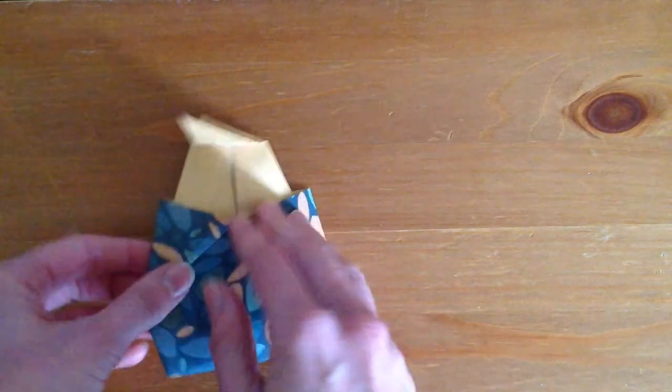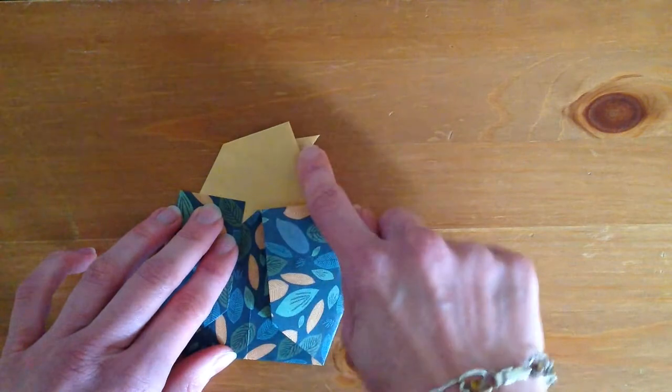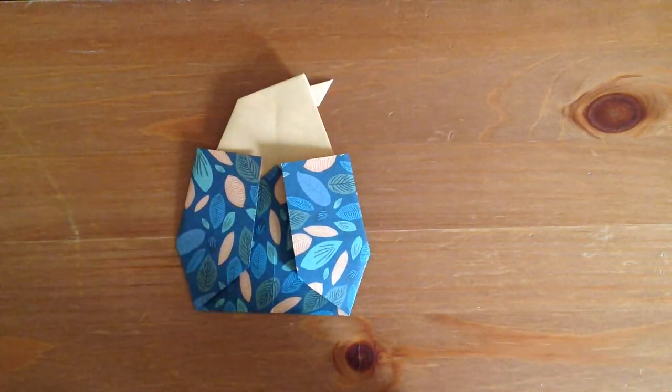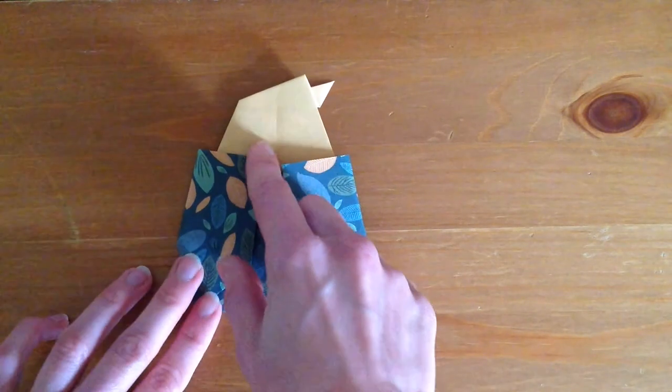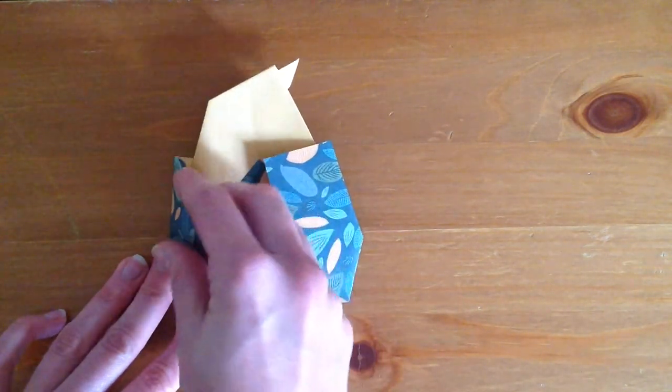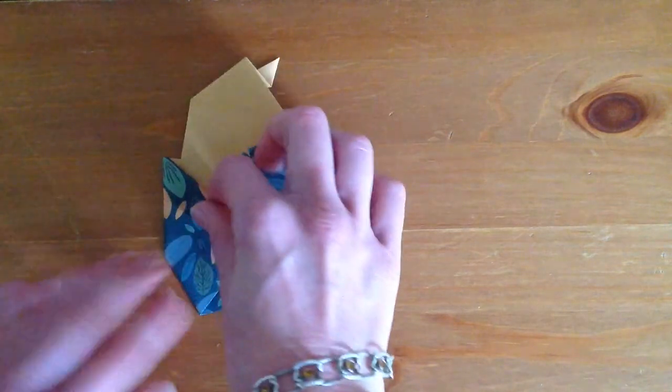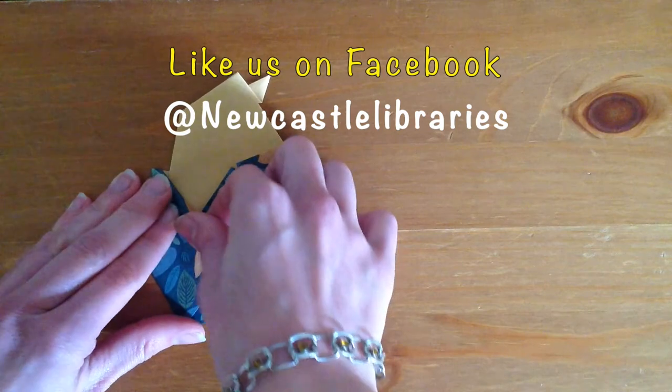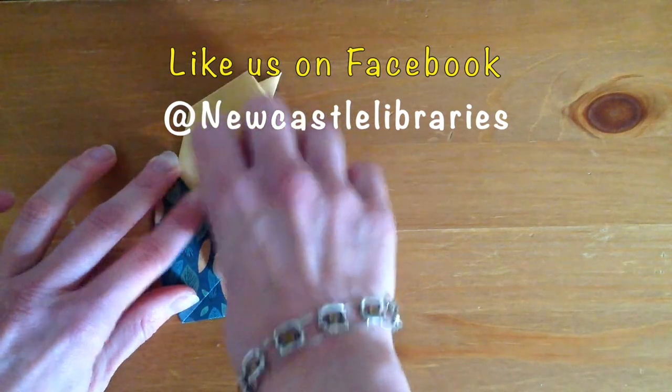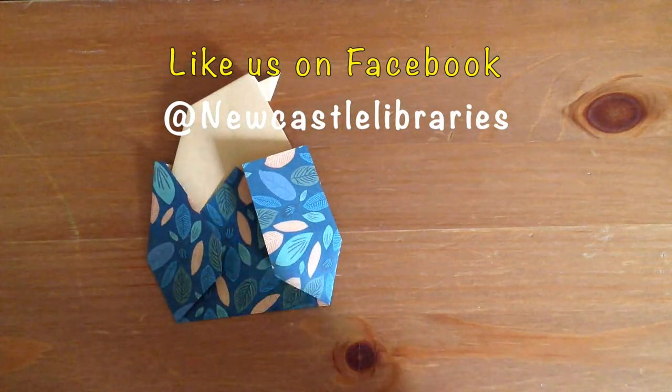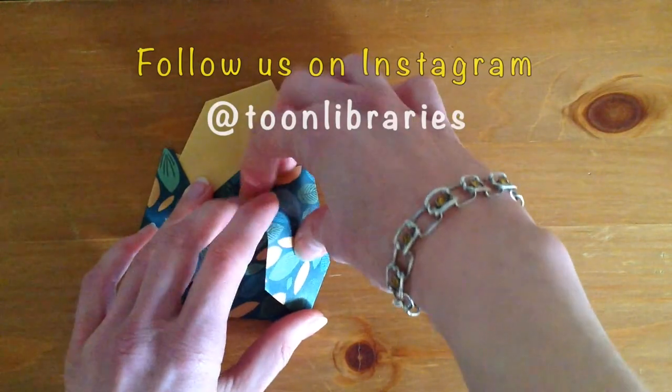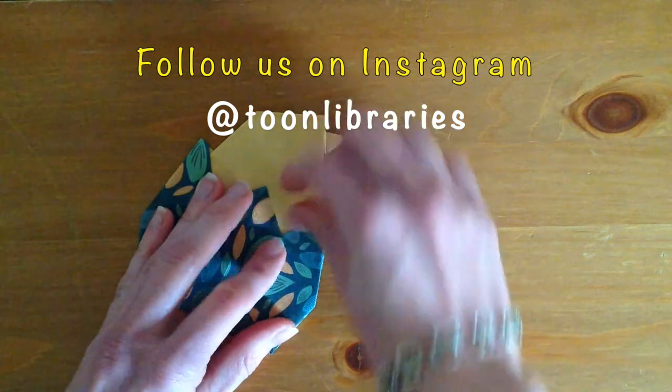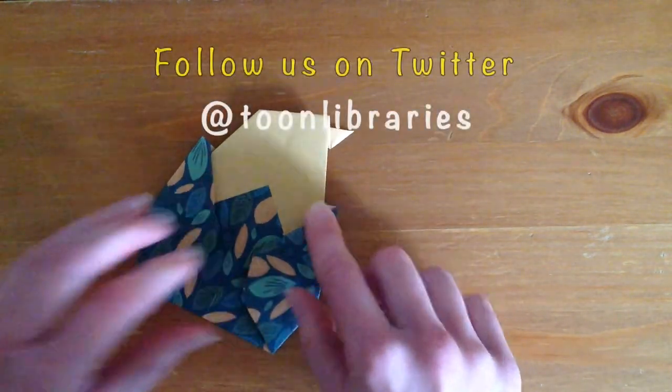And when I turn it over I can see it's now got the head and a little beak poking out. I'm going to finish shaping my shell by taking this corner here and tucking it under so I end up with a pointy bit here. And I'm going to do the same with the other side, tucking this under so I have a pointy bit on that side.